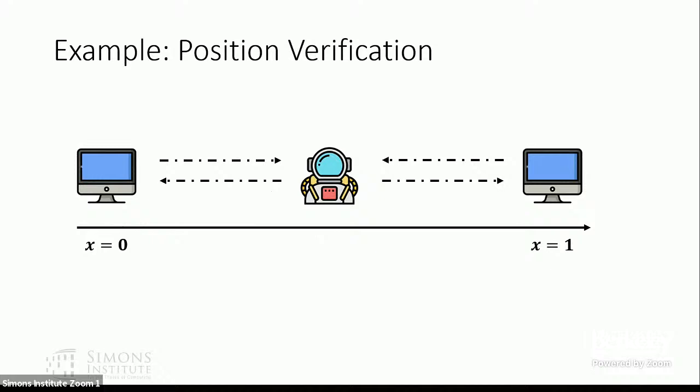In this talk I will briefly discuss unclonable states — not give implications of copy protection — but use the simplest example, which is called position verification. We will see the difference between different unclonable states by looking at their implementation of position verification. Position verification is a protocol to verify one's location in a cryptographic way, and we'll look at it in a one-dimensional space.